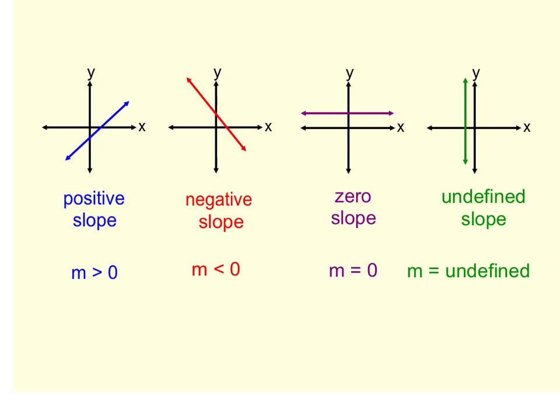Slope has four different possibilities in terms of what it might look like. You can have a positive slope. Positive slope, and this little m, I'm not exactly sure why m stands for slope, but this means that your slope is greater than zero. So anytime your slope is greater than zero, you have a positive slope.